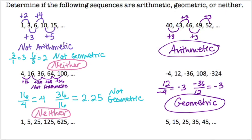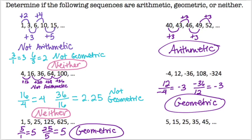The fifth sequence is 1, 5, 25, 125, 625. We can go straight to division: 5 divided by 1 is 5 and 25 divided by 5 is also 5, so we know it's geometric. The last sequence is 5, 15, 25, 35, 45 — you can already tell it's adding 10 each time, so it's arithmetic.